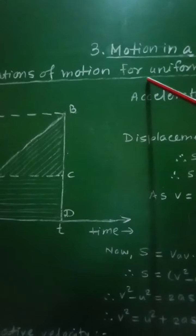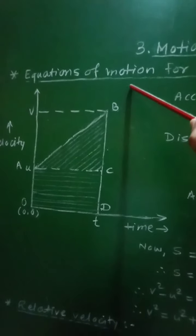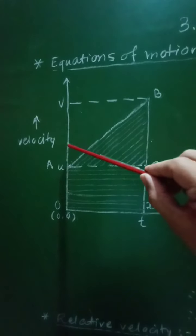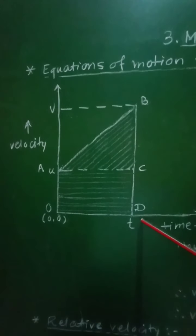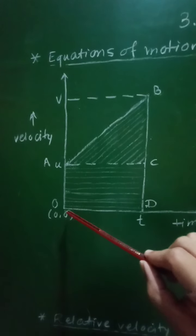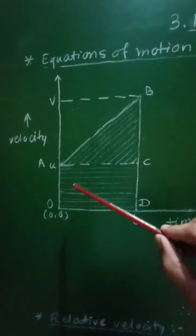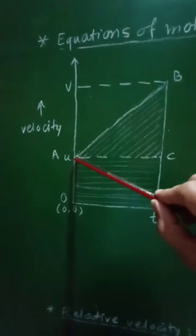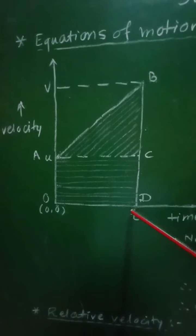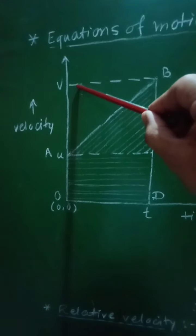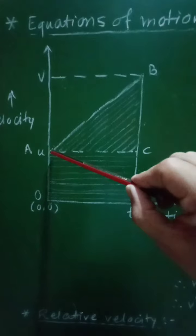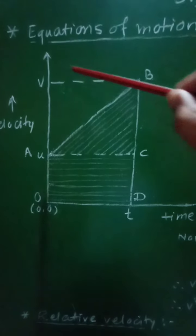In this point, we will have to obtain the equations of motion, that is kinematical equations. In order to obtain these equations of motion, let us consider the velocity against time graph for an object having its position at x = 0 at time t = 0. Let the velocity at t = 0 be u, considered as the initial velocity of that object, and at any time t, its velocity equal to v, considered as the final velocity.